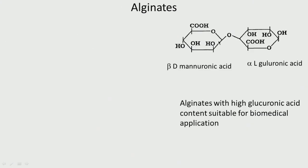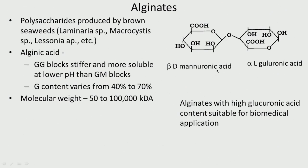Alginates — alginic acid and so on, like guar gum — contain mannuronic acid connected by guluronic acid with a beta linkage. Those with high guluronic acid content are good for biomedical applications because they are stiff; when the guluronic acid amount goes down it loses stiffness. These are produced by brown seaweeds. The G content can vary between 40 to 70% and the molecular weight is 50,000 to 100,000 kilodaltons.